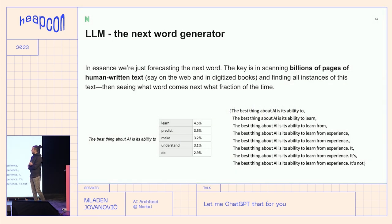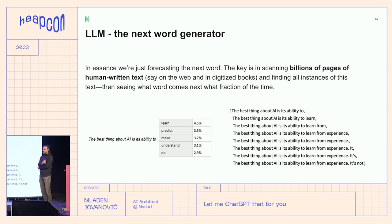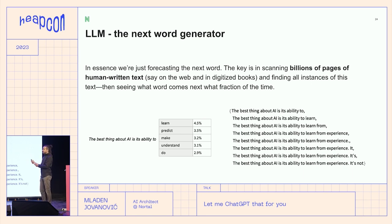LLMs under the hood — this is a big simplification, but in essence it's also true. In essence, we are just forecasting the next word. All of these fancy LLM models — however powerful they are — you give them a bunch of text and the model is predicting the next word, over and over, and then you get your full answer.